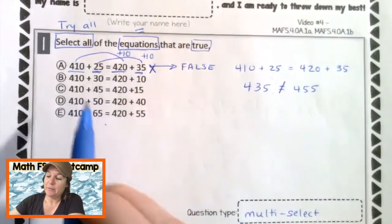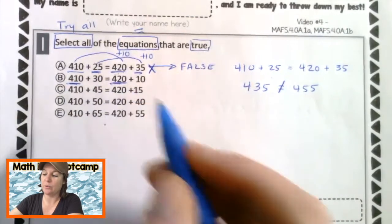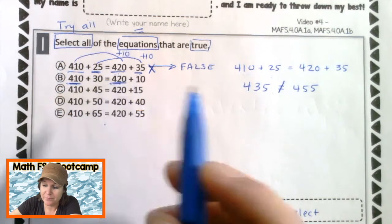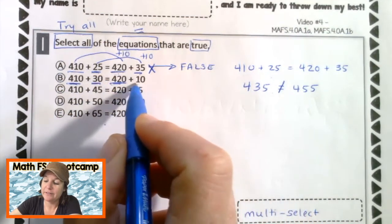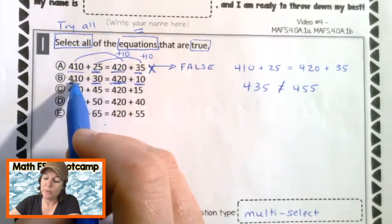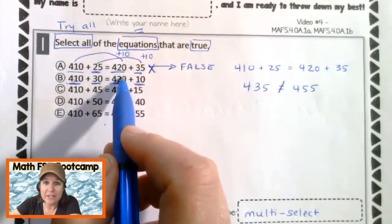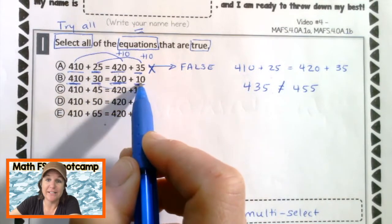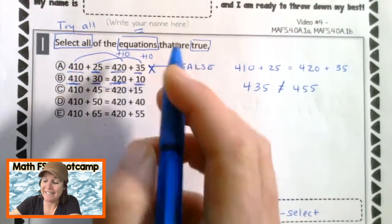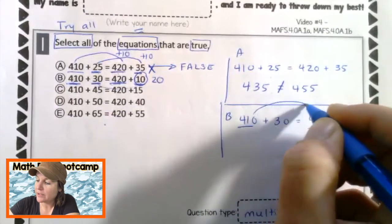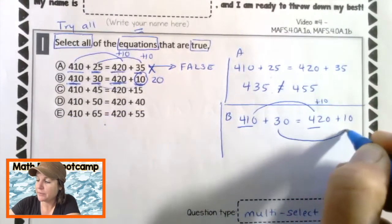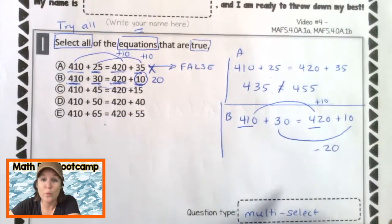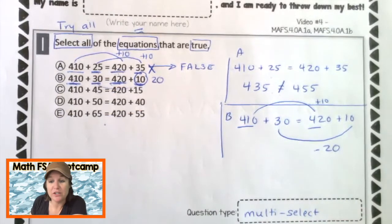So we're going to try that same thing for B, C, D, and E. So let's go ahead and eliminate A. Okay, here we have 410 on this side, 420 on that side. So again, we're still going up 10. On this side, we've got 30. And here we have plus 10. So because we're going up, we're adding 10 here, we actually need to be subtracting 10 from 30 to get to 10, which that should be 20, not 10. From here to here, we are adding 10. And from here to here, we should be subtracting 10 to balance it out. But we're not. We're subtracting 20, which makes this an unbalanced equation. It makes it false.